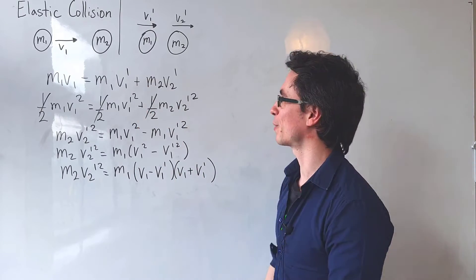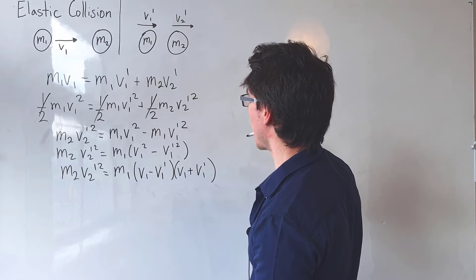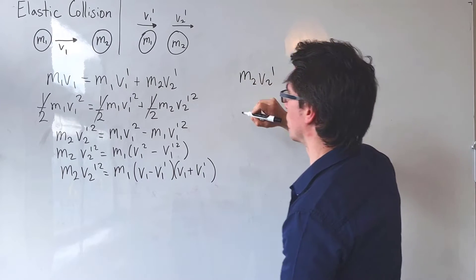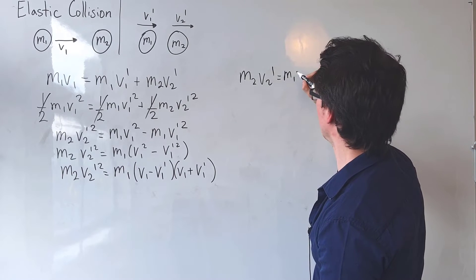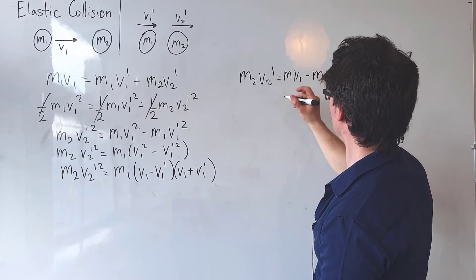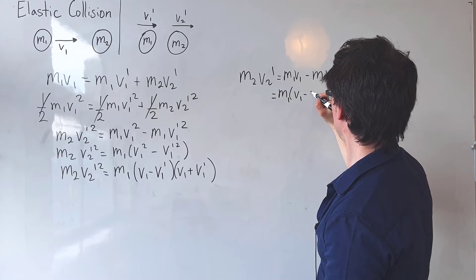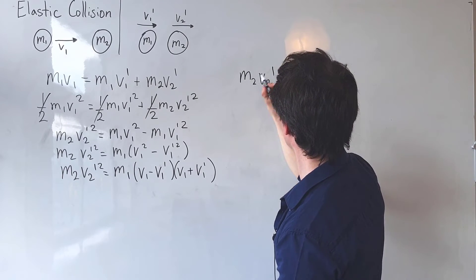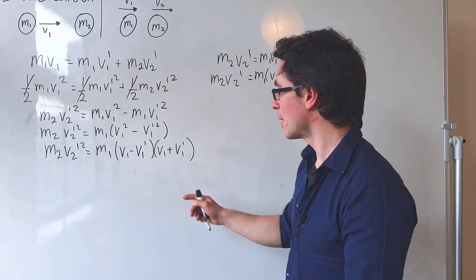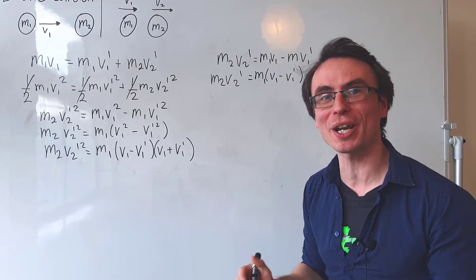Now let's consider the conservation of momentum equation. I'm going to take the first equation and rearrange it for m2 v2 prime. What we get is: m2 v2 prime equals m1 v1 minus m1 v1 prime, which we can write as m1 times (v1 minus v1 prime).